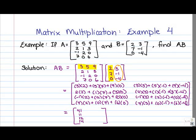For the second column: in entry 1, 2, we've got 9 minus 5 minus 36, so that's negative 32. In entry 2, 2, we've got 6 minus 1 minus 12, so that's negative 7. In entry 3, 2, we've got negative 3 minus 2 plus 0, so that's negative 5. And in entry 4, 2, we've got 21 plus 0 minus 24, so that's negative 3.